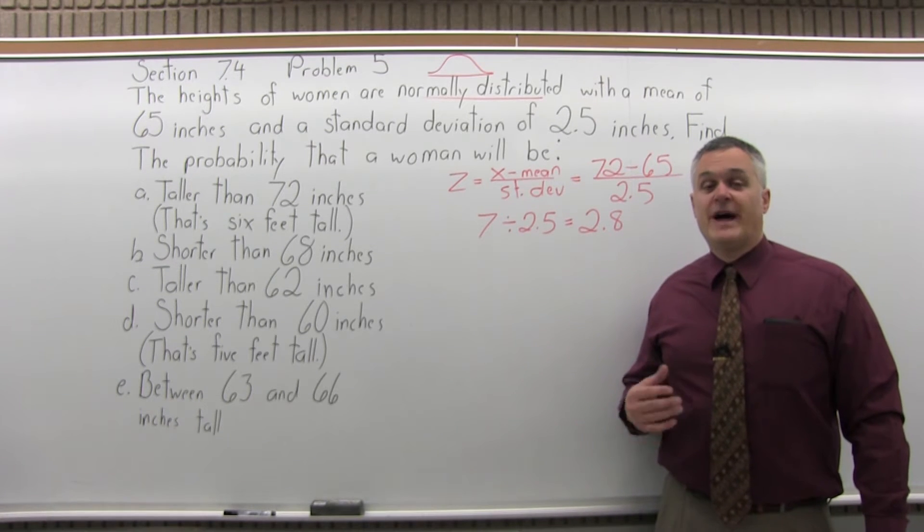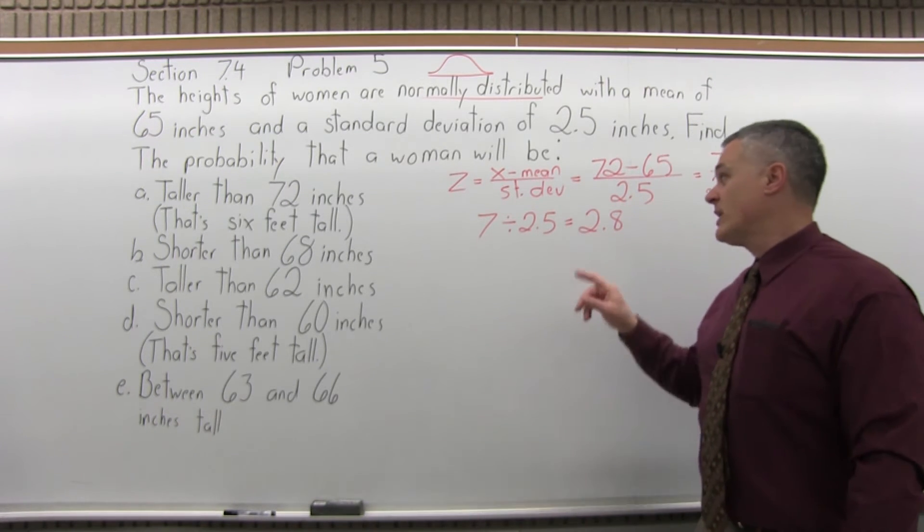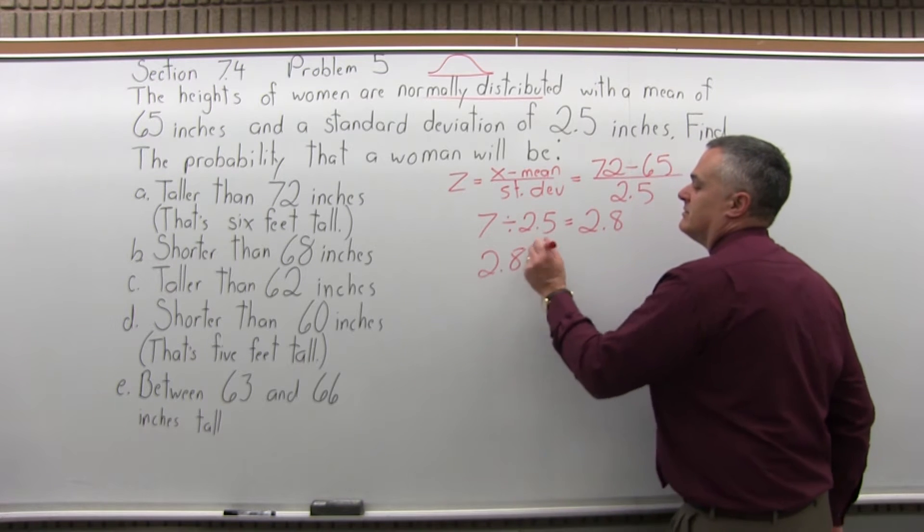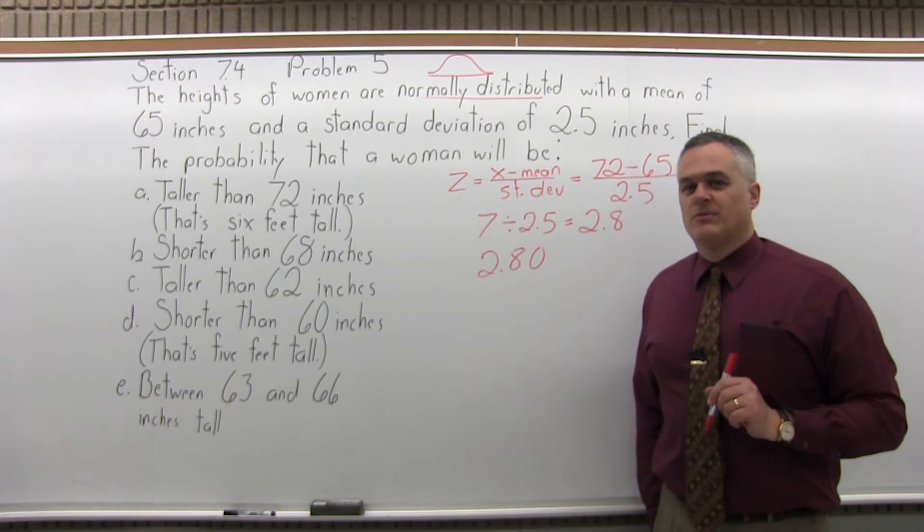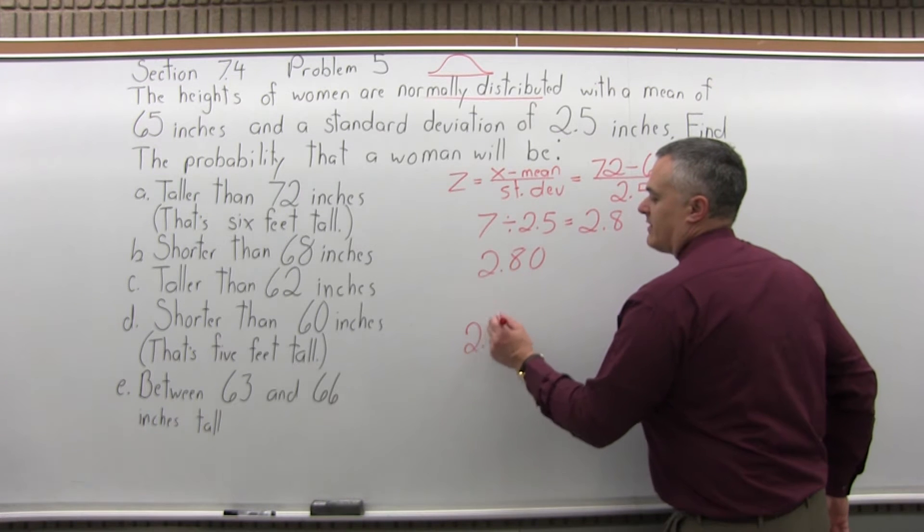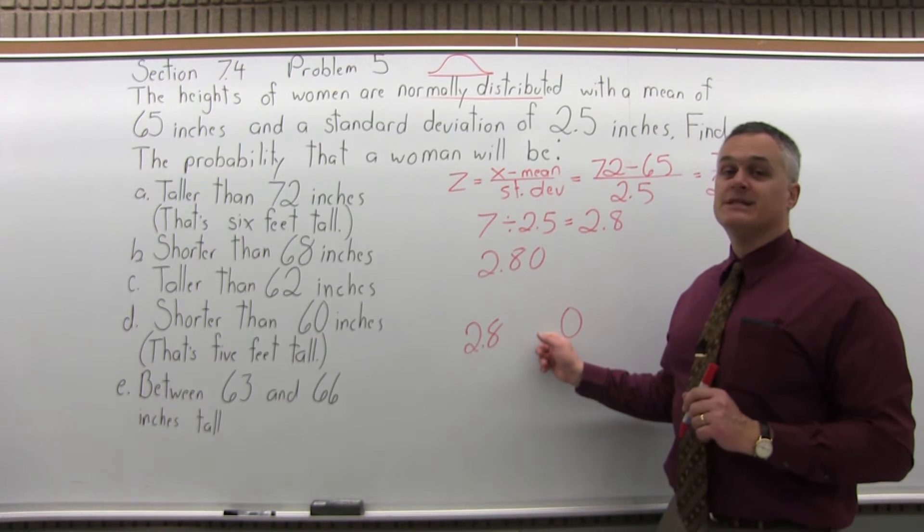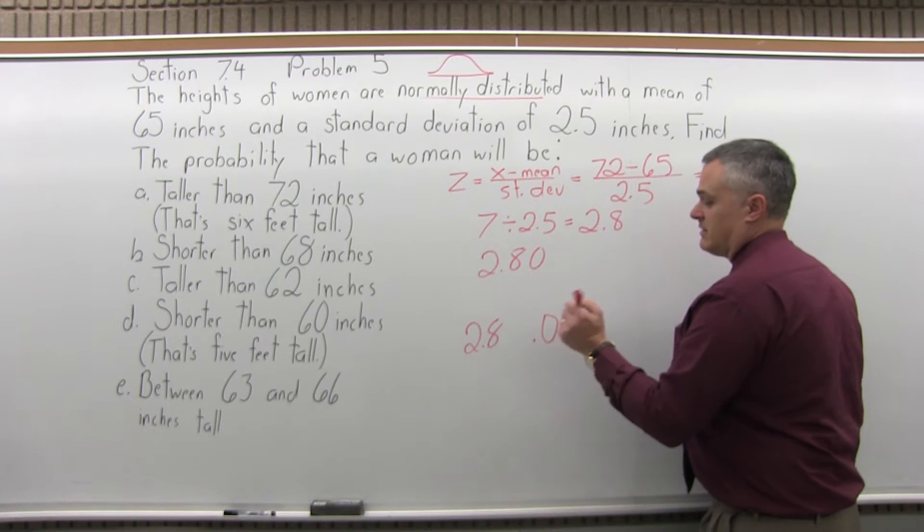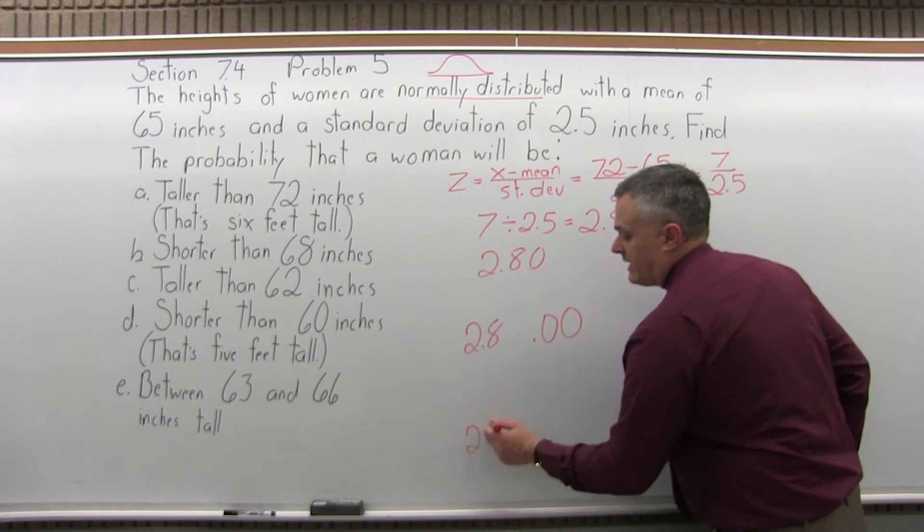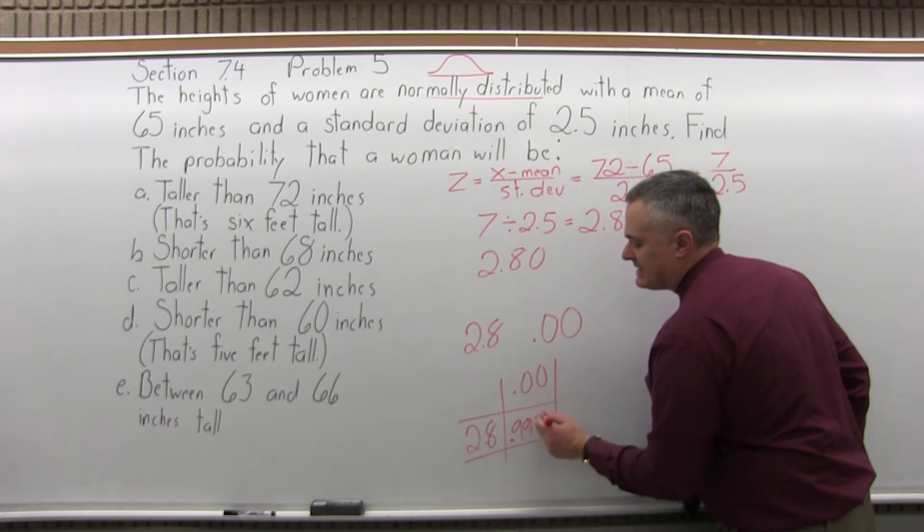So 2.8 is the z-score, that's what we can look up in the chart. To look up 2.8 in the chart, write it so that it has two places after the decimal, so 2.80. The next step is split the number into two parts by pulling off the rightmost digit, the zero. So it'll be 2.8 and zero. Then put a .0 in front of that rightmost digit. Now, go to the positive 2.8 row of the chart, the 00 column, and see where they intersect. And they will intersect at .9974.